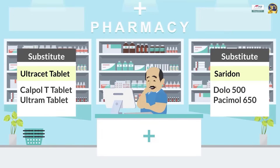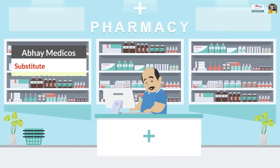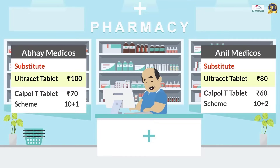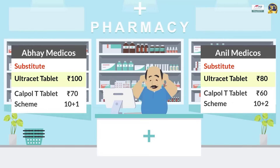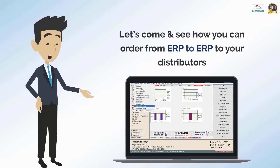Moreover, you also get the facility of substitute products, as the software displays related products with the same salt and composition for the item for which you are placing the order. You can compare the rates and schemes with the help of substitute products and avail the best deals from your distributors.